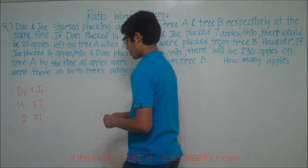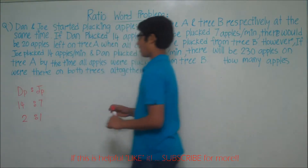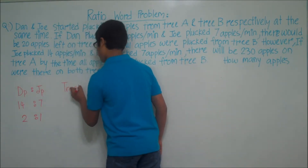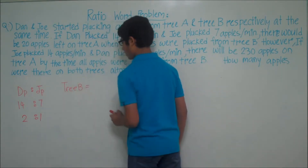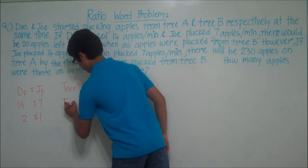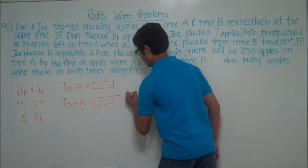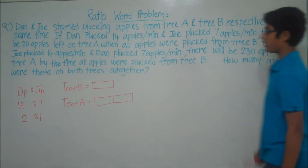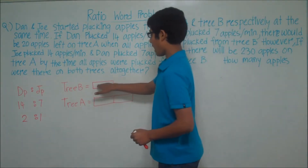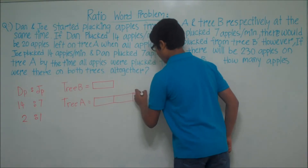This means that when Joe plucks one unit of apples, Dan plucks two units of apples. Let's draw this out. We know that Joe plucked on tree B and Dan plucked on tree A. So on tree B, Joe plucked one unit of apples, and Dan, who plucked on tree A, plucked two units of apples. We know there would be 20 apples left on tree A when all apples were plucked from tree B, so tree A equals two units plus an extra 20 apples.